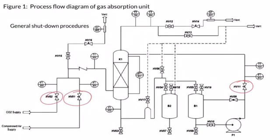General Shutdown Procedures: Drain all liquids from column K1 by opening valve HV03. Drain all liquids from receiving vessels B1 and B2 by opening valves HV07 and HV08. Then close valves HV03, HV04, HV07, HV08, and HV10.